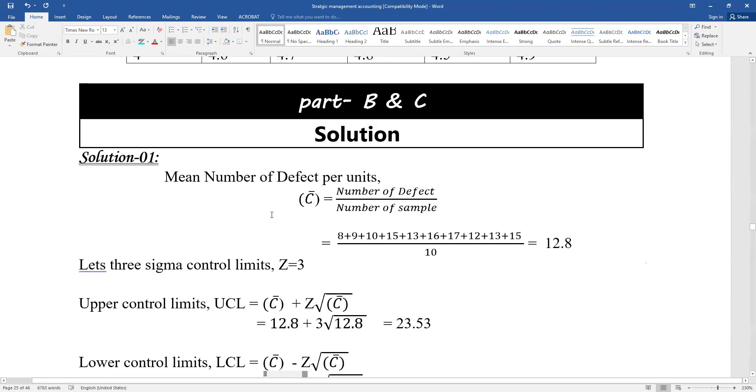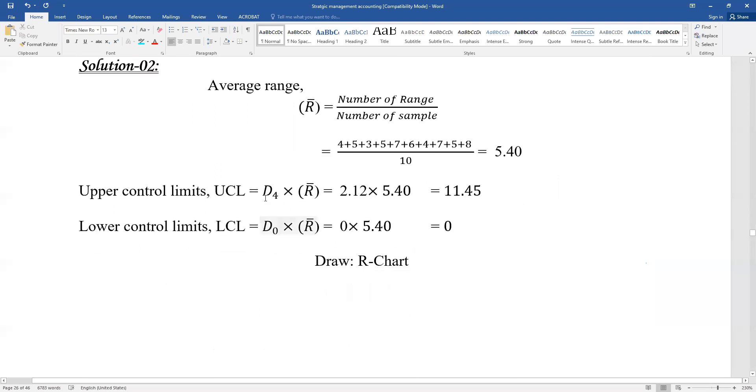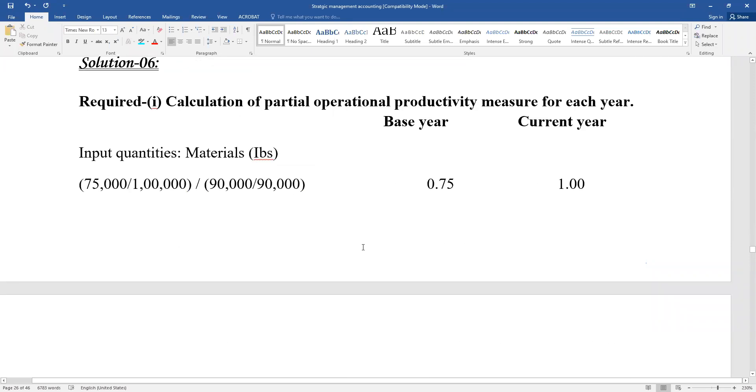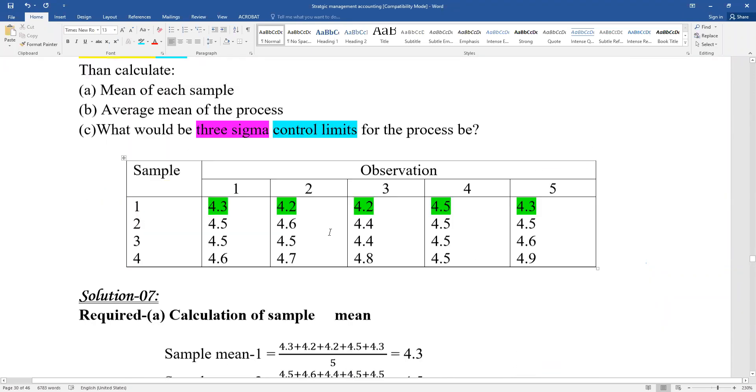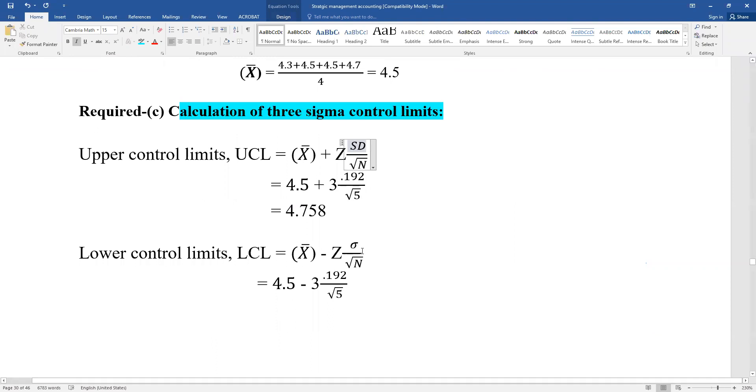The formula is X-bar plus three times SD divided by root n. X-bar is the average mean. Standard deviation sigma, divided by root n.